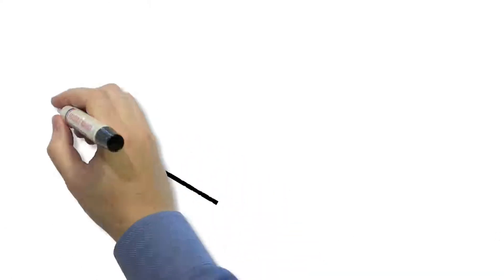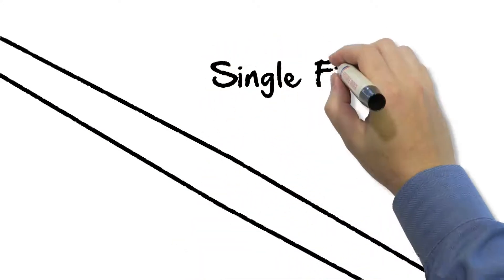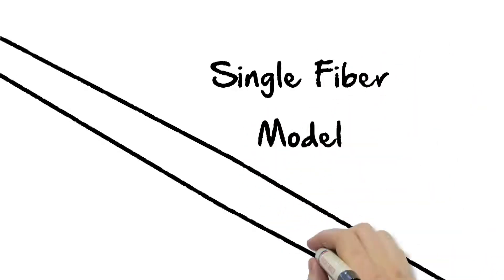What is very commonly used in this field of research is something called a single fiber model. You're basically taking one of the filter fibers inside of your filter, you cut it in half, and you're looking at it from the side and it looks something like this.